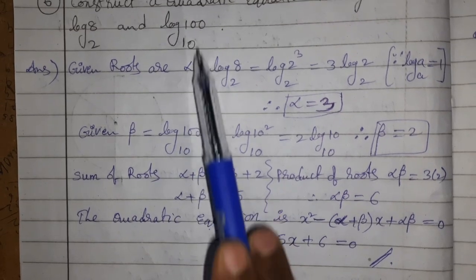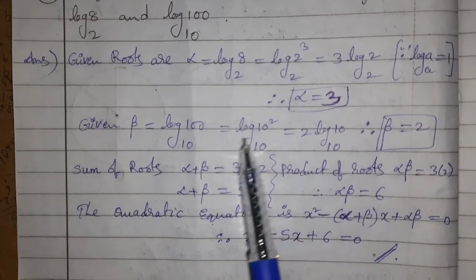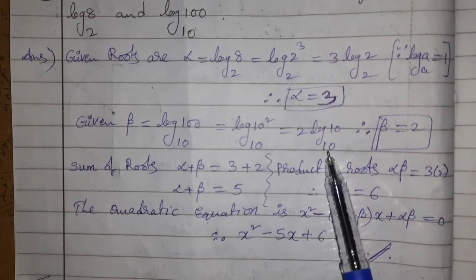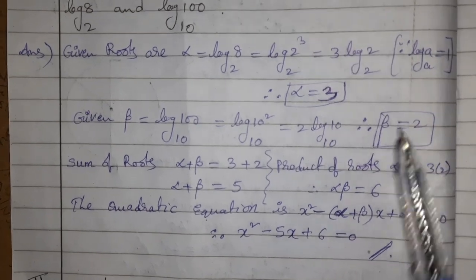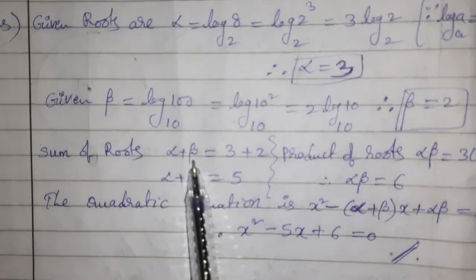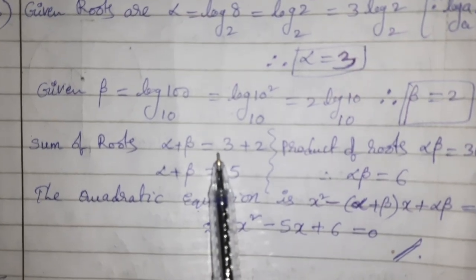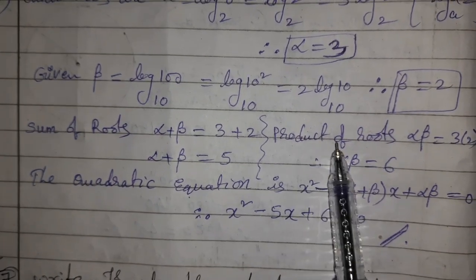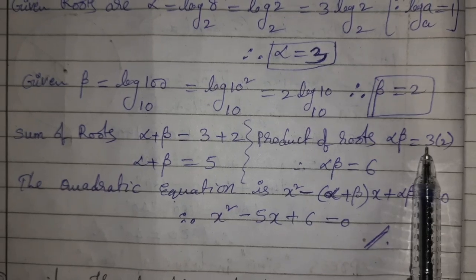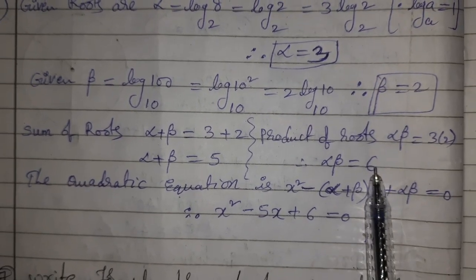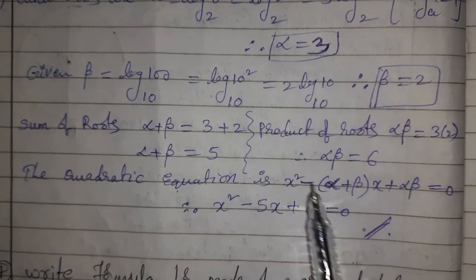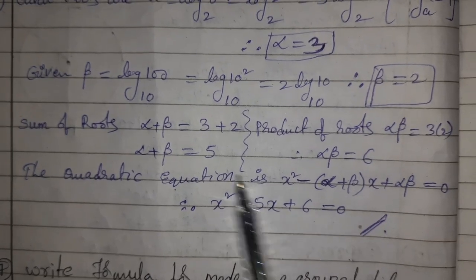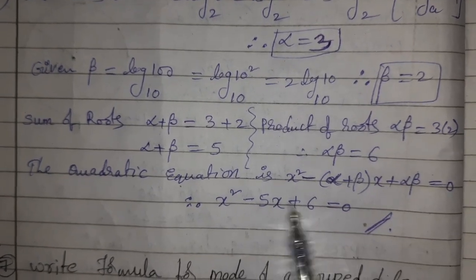Beta = log₁₀100 = log₁₀(10²) = 2·log₁₀10 = 2 × 1 = 2. Sum of roots: α + β = 3 + 2 = 5. Product of roots: α × β = 3 × 2 = 6. Quadratic equation: x² − (α + β)x + αβ = 0, giving x² − 5x + 6 = 0.